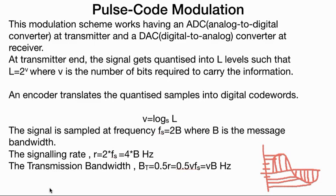A signal is sampled at frequency Fs equal to 2V according to the Nyquist rate. Sometimes the signaling rate is twice Fs, or the signaling rate is V into Fs. The transmission bandwidth will be half of the signaling rate. Keep in mind how to calculate number of levels, sampling frequency, and transmission bandwidth — these are very important because questions often ask about transmission bandwidth.